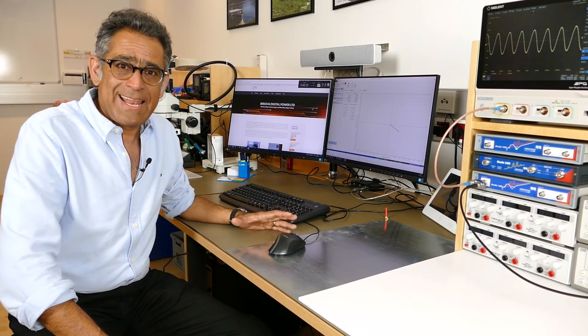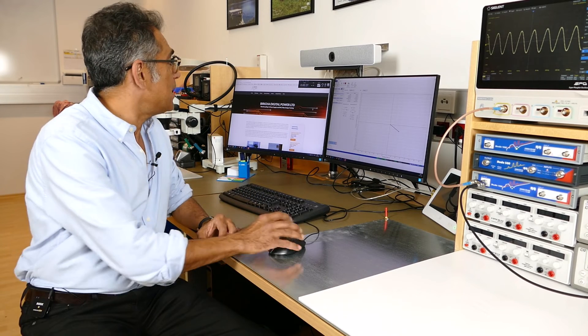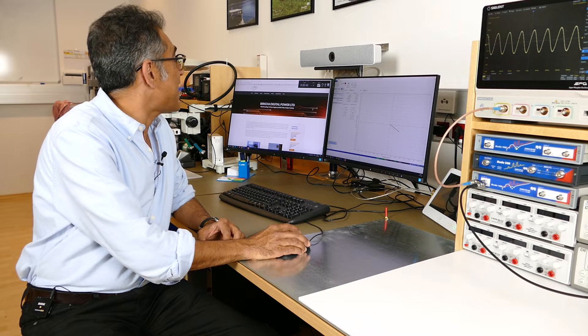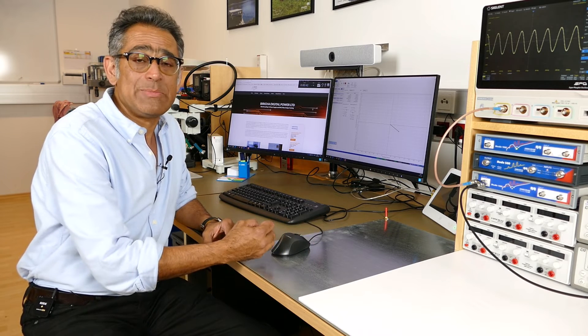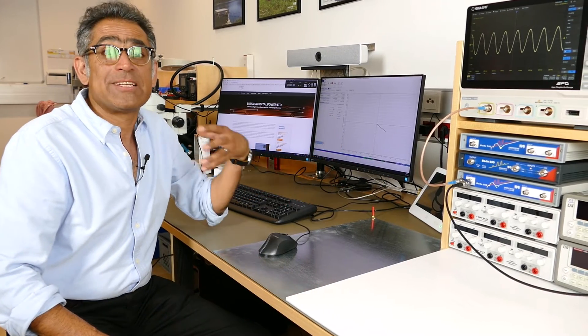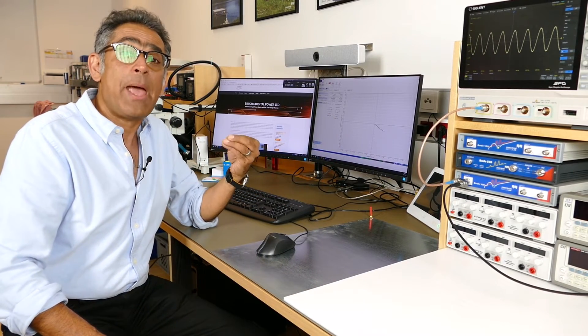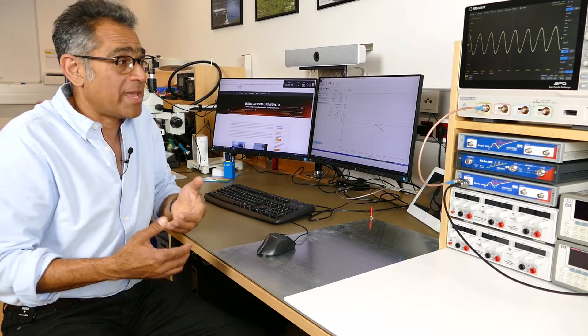So here we are in the lab, I have got the Bode 100, I'm generating a signal of 15 MHz at exactly 13 dBm, that's 13 dBmW. Note that Bode 100 specifies its output in dBm, however really we're getting a voltage signal coming out.